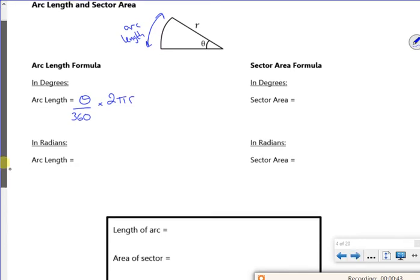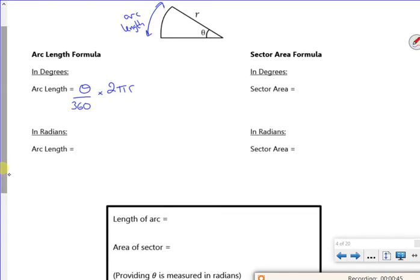So let's have a think about if it's in radians then. Because if it's in radians, 360 is 2π, so really it's θ over 2π times by 2πr. And if you look, the 2π's will cancel, but I get θ times by r for my arc length.